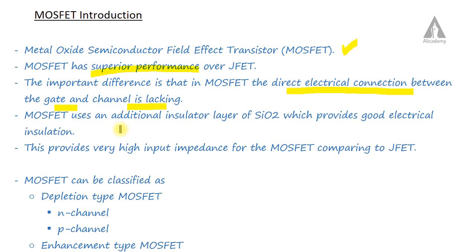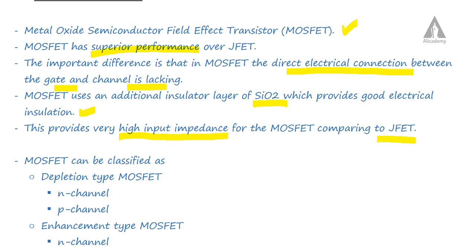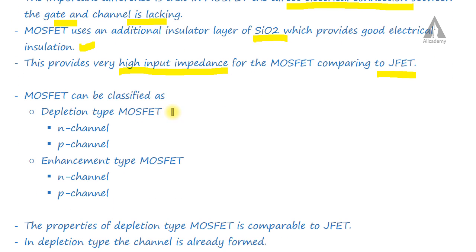The MOSFET uses an additional insulator layer of SiO2 between the gate and the channel, which provides good electrical insulation. Due to this SiO2 insulator layer, the MOSFET has a higher input impedance when compared with the JFET.